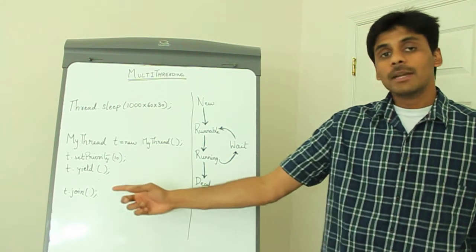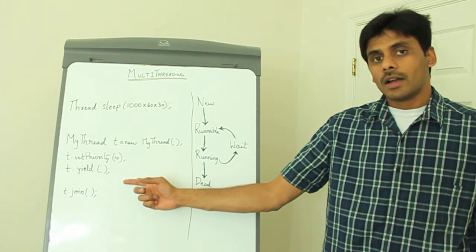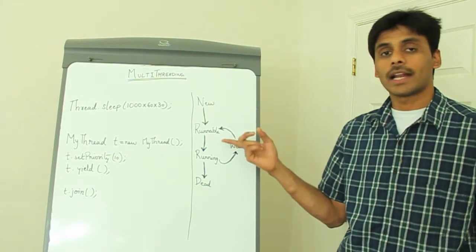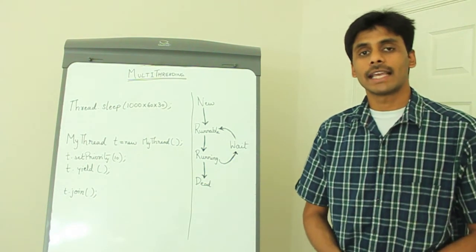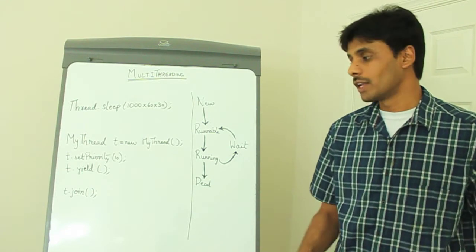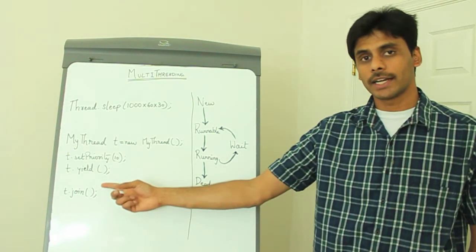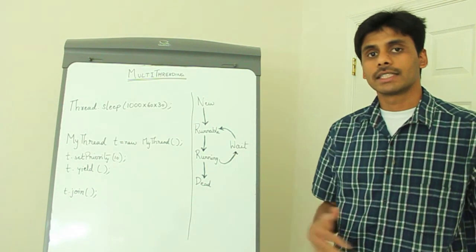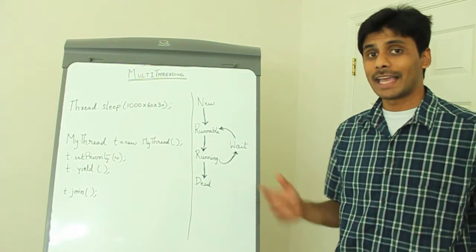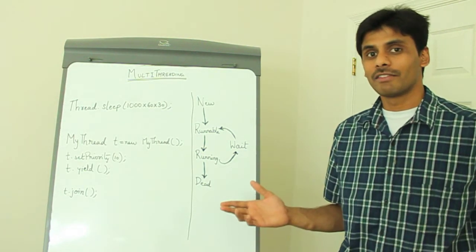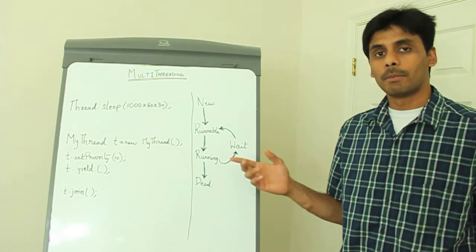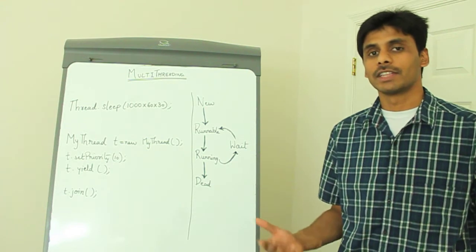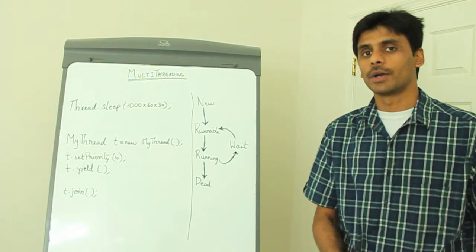We invoke the yield method on a thread to push the thread from current running state to a runnable state and to allow any other thread with the same level of priority to run. So when you invoke a yield method on a particular thread, it will push that thread to a runnable state and any other thread with the same priority will be moved to the running state. Again, there is no guarantee that the thread scheduler will pick another thread. It can push the same thread back onto the running state.